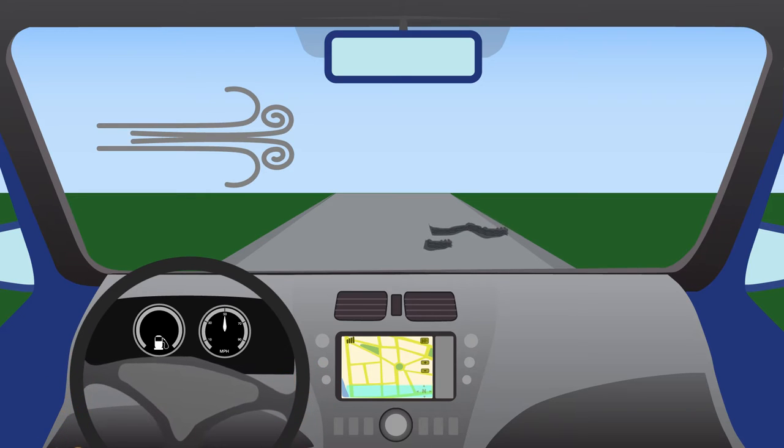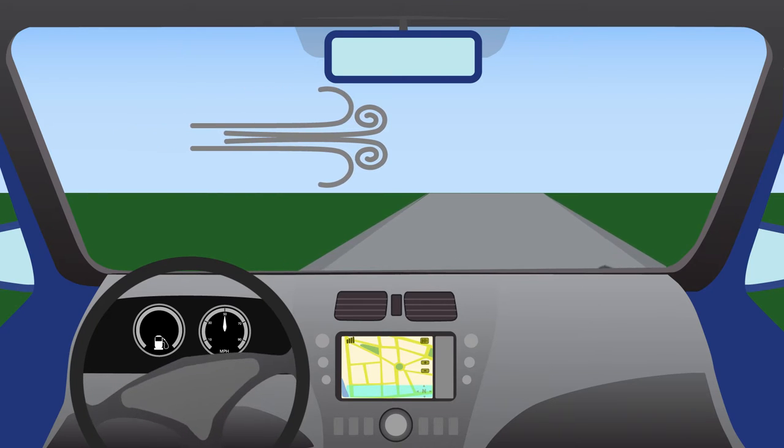As self-driving cars and other autonomous vehicles become a reality, how can researchers make sure these systems remain in control under highly uncertain conditions?